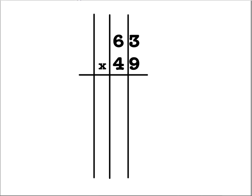The first thing that I'm going to do after I've drawn the lines is take a look at my two numbers. I have 63 and 49 and if I pull apart each of those numbers, I end up getting 60 and 3 and 40 and 9.